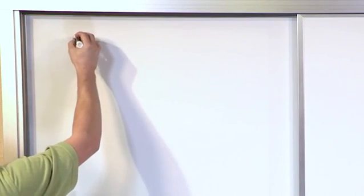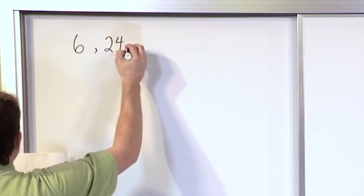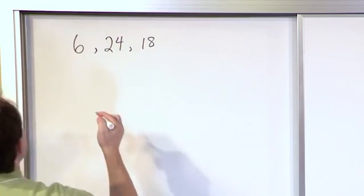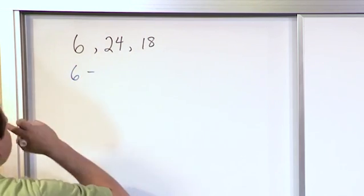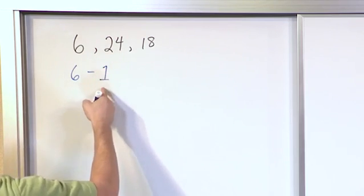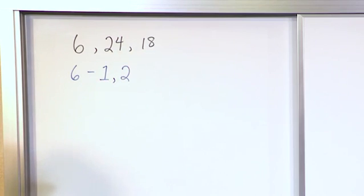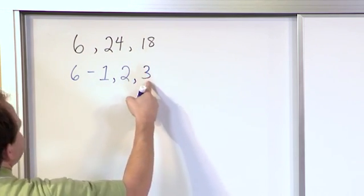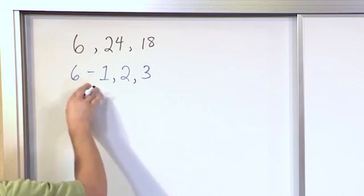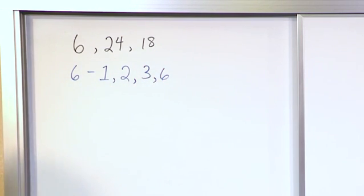So if you wanted to find the greatest common factor between the numbers 6, 24, and 18, here is how you would do it. The first thing you'd do is write down your first number, which is 6, and write down the factors. Number 1 is always a factor because it can divide evenly into 6. Number 2 is a factor because 2 times 3 is 6. Number 3 is a factor because 3 times 2 is 6. 4 and 5 are not factors because they cannot be divided evenly into 6. But the number itself is always a factor, so we can list that out.